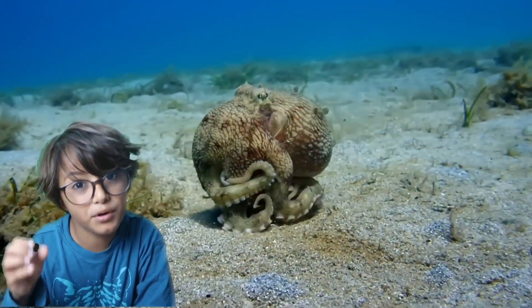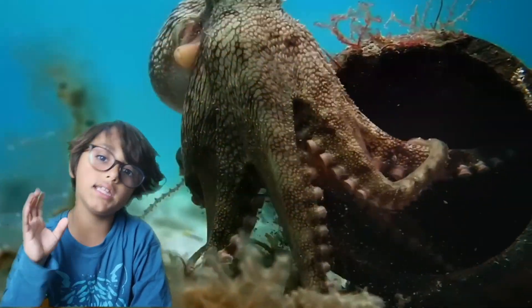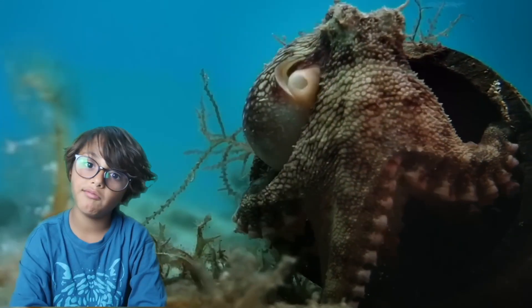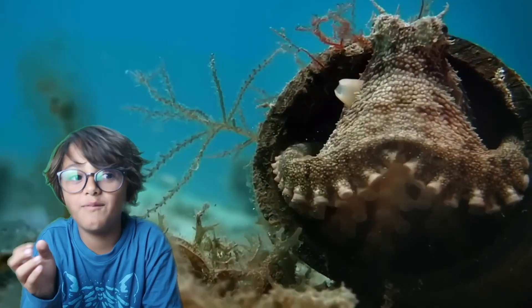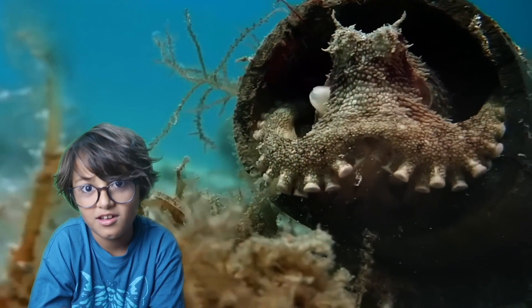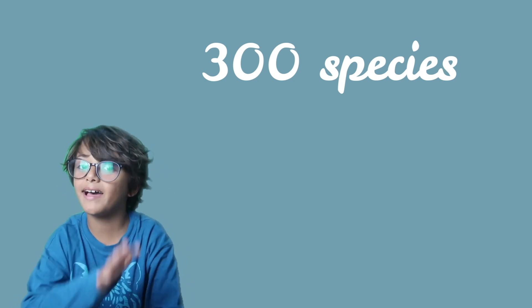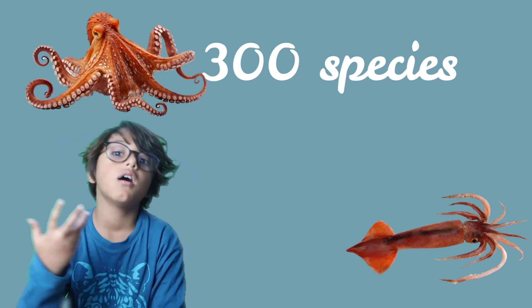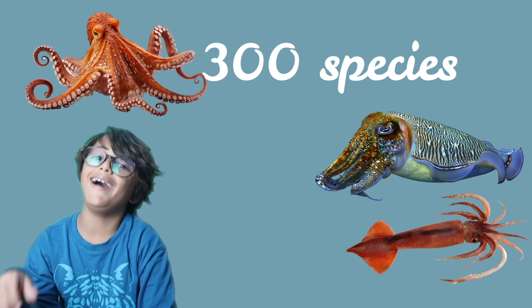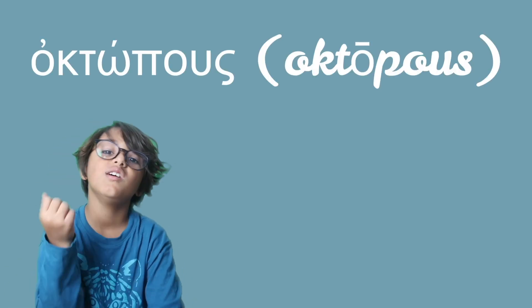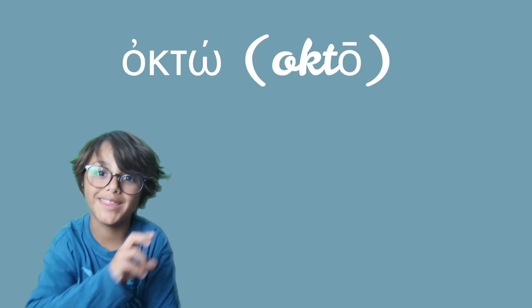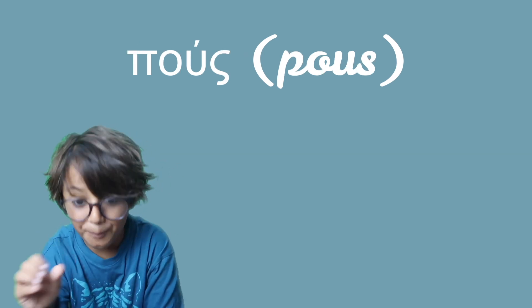An octopus is a soft body mollusk with eight limbs called tentacles. Octopuses are from the family Octopoda which has over 300 species inside that group including squids, cuttlefish and nautiloids. So the Latin scientific word octopus came from ancient Greek. Octo meant eight and pus meant feet, eight feet.